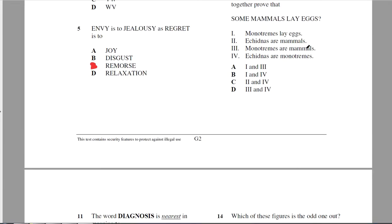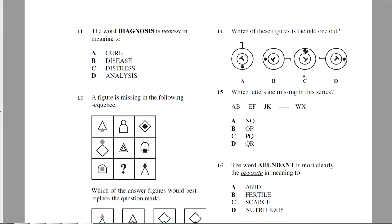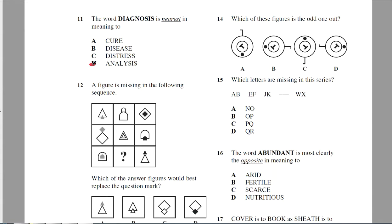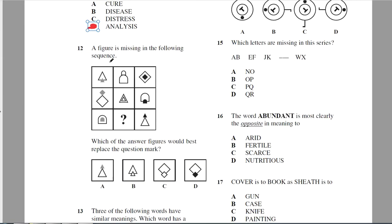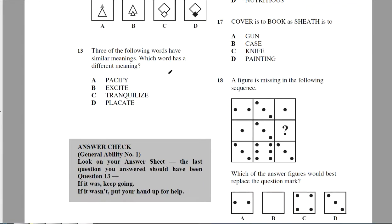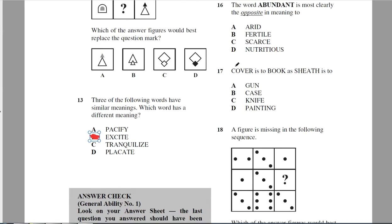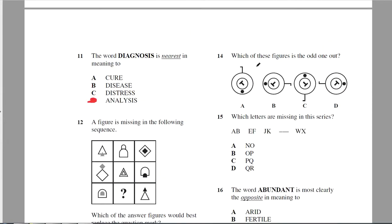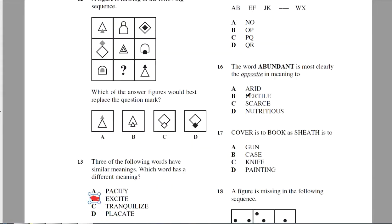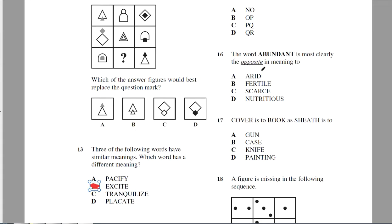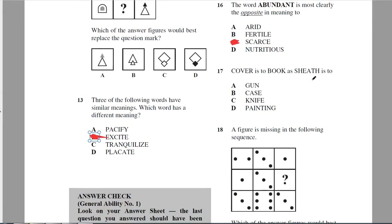I'll skip the logic one. The word diagnosis is nearest in meaning to analysis. I'm going to skip this pattern one. Three of the following words have similar meanings. It's pacify, tranquilize, and placate, so the one that stands out is excite. Sixteen, abundant is most nearly the opposite to scarce. Abundant means you have too much. Cover. A cover is on the outside of a book. A sheath would be the outside of a knife.